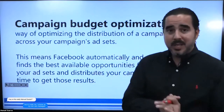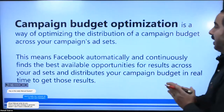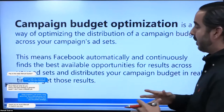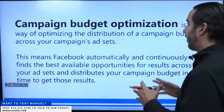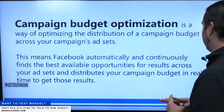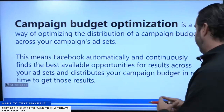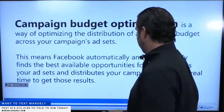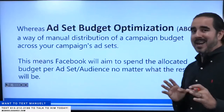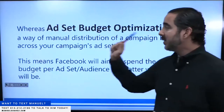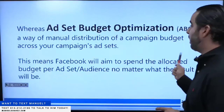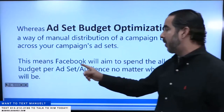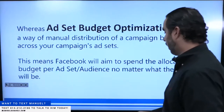Campaign budget optimization is a way of optimizing the distribution of a campaign budget across your campaign's ad sets. This means Facebook automatically and continuously finds the best available opportunities for results across your ad sets and distributes your campaign budget in real time to get those results. Ad set budget optimization is a way of manual distribution of a campaign budget across your campaign's ad sets. Facebook will aim to spend the allocated budget per ad set audience, no matter what the result will be.